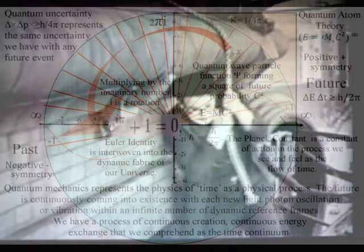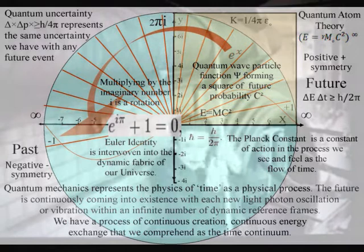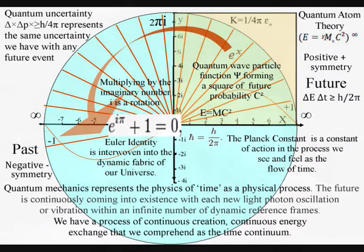Therefore, the uncertainty of quantum mechanics, known as Heisenberg's uncertainty principle that is formed by the probability wave function, is the same uncertainty we have with any future event within our own reference frame that we can interact with, creating a future relative to our actions.